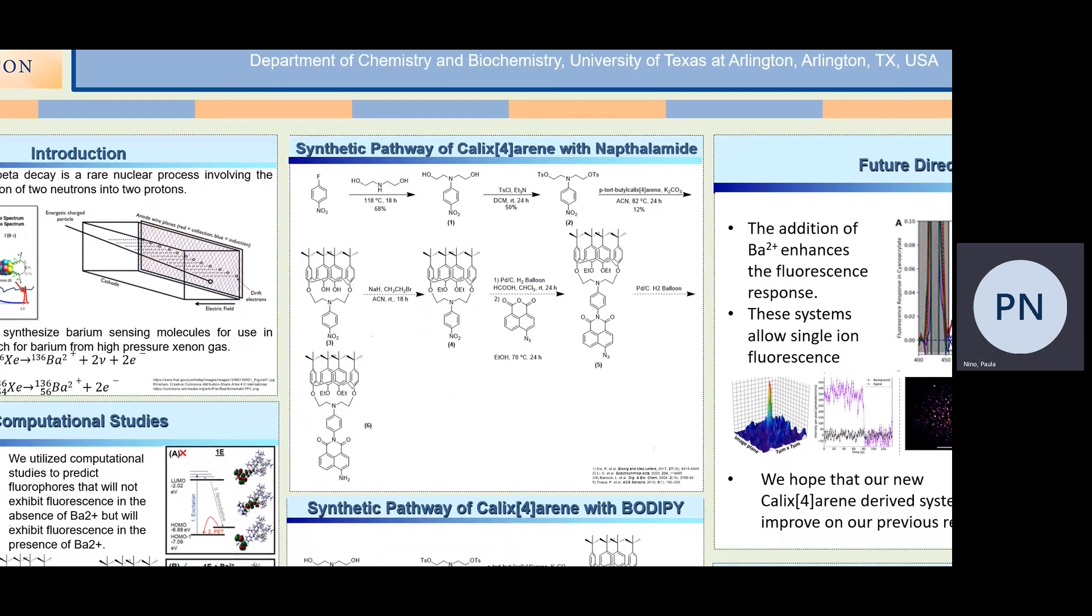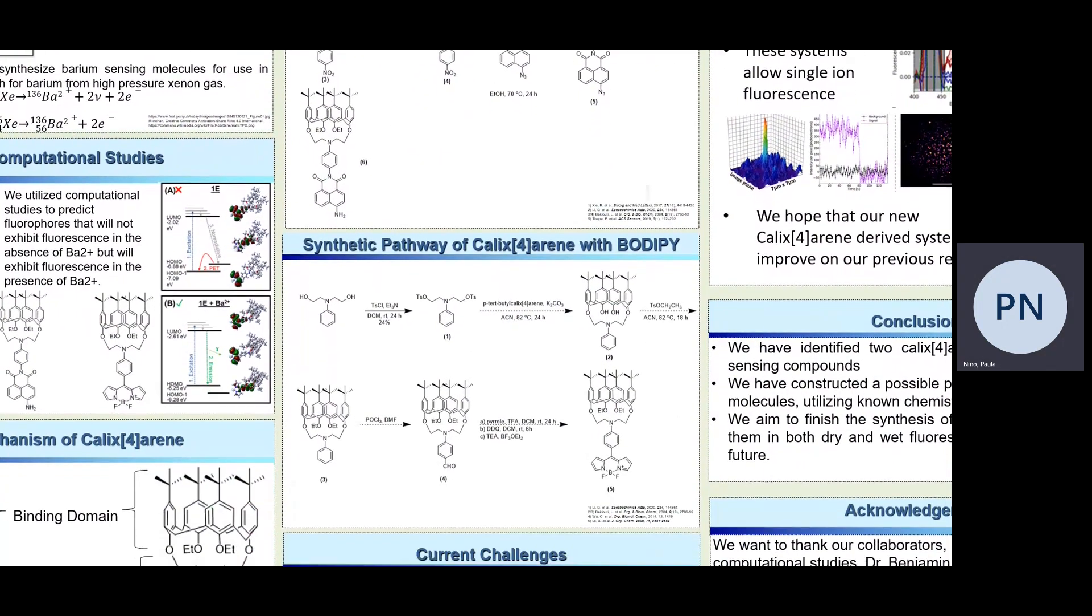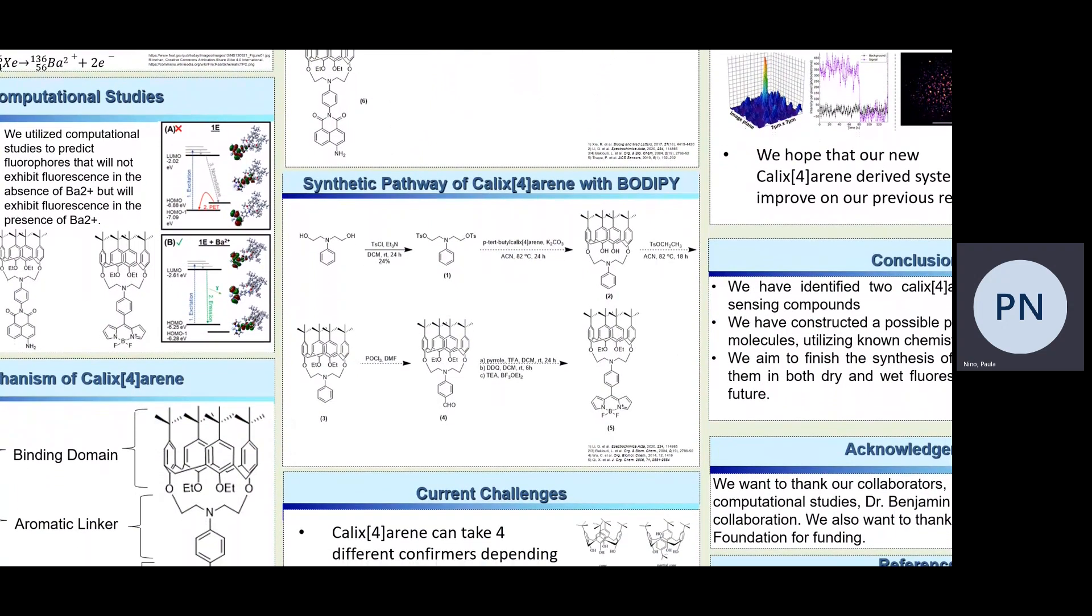As per synthesis 2, in order to create the calixarene with the BODIPY, we would have tosylation in order to activate. We then add the calixarene. Tosylation then allows us to add the ethane groups in a less harsh reaction than our first synthesis. We would then use the Vilsmeier-Haack process to install aldehydes to the cyclohexane, to the bottom of the structure. We would lastly then add the fluorophore, BODIPY, in a three-step process. First, we add the pyrrole groups. We then create a double bond to the centered ring, and lastly we would add the boron.